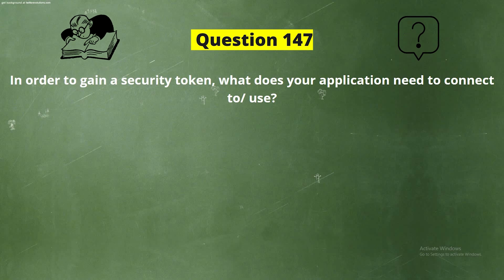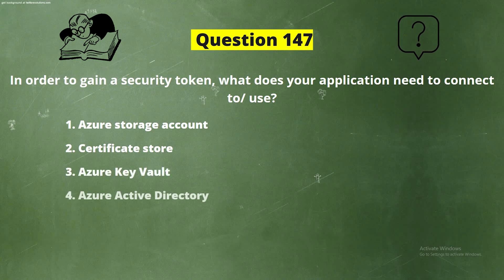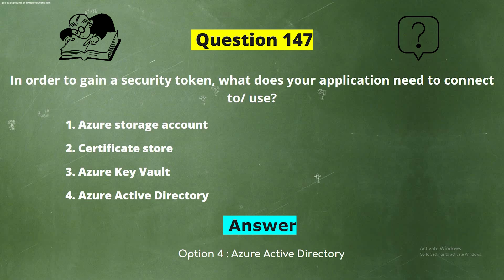Question 147. In order to gain a security token, what does your application need to connect to? Options: Option 1, Azure Storage Account; Option 2, Certificate Store; Option 3, Azure Key Vault; Option 4, Azure Active Directory. The correct answer is Option 4, Azure Active Directory.